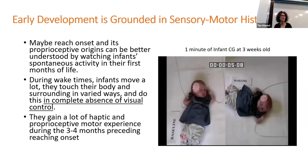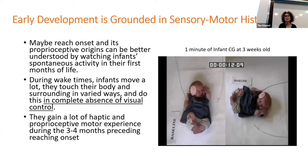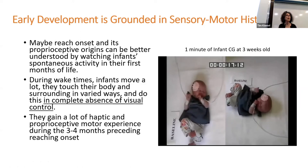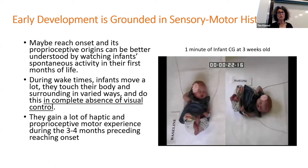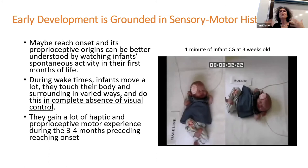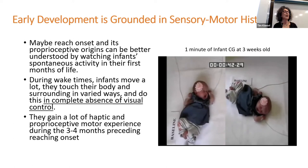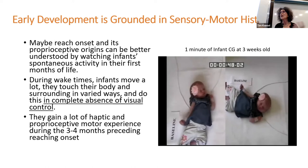Reach onset and its proprioceptive origin can be better understood by watching infant spontaneous activity in their first months of life. During wake times, infants move a lot — this is a three-week-old baby with eyes closed, moving a lot. They touch their body in varied ways, and most importantly they do this in complete absence of visual control. I think what happens during those weeks before reach onset is they gain a lot of haptic and proprioceptive motor experience that is really handy for directing their hand in space. All this happens in their personal space, and in those data, infants do not look at their hand during this early period.